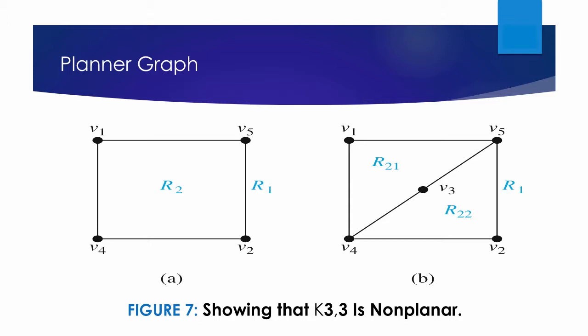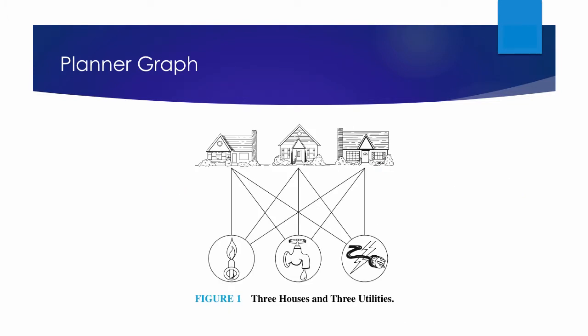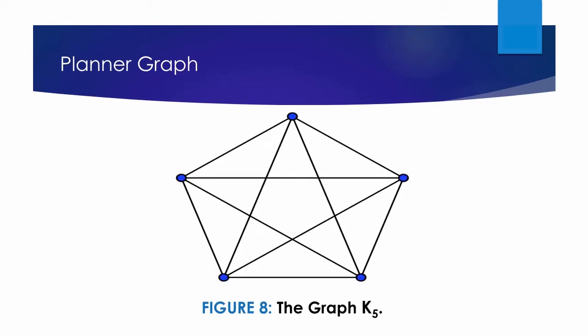This solves the utilities and houses problem described at the beginning of this video: the three houses and three utilities cannot be connected in the plane without a crossing. A similar argument can be used to show that K5 is also non-planar.